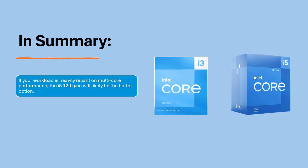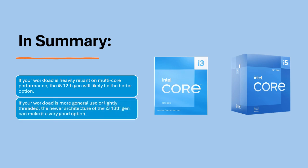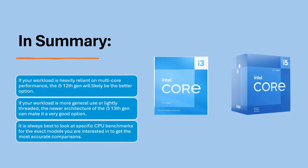In summary, if your workload is heavily reliant on multi-core performance, the i5-12th Gen will likely be the better option. If your workload is more general use or lightly threaded, the newer architecture of the i3-13th Gen can make it a very good option. It is always best to look at specific CPU benchmarks for the exact models you are interested in to get the most accurate comparisons.